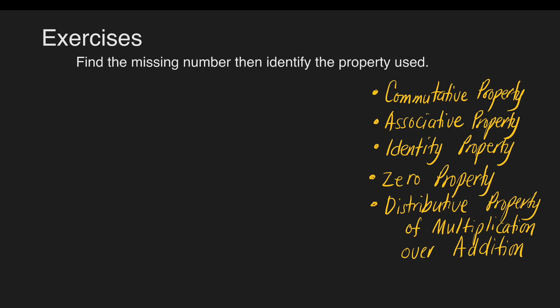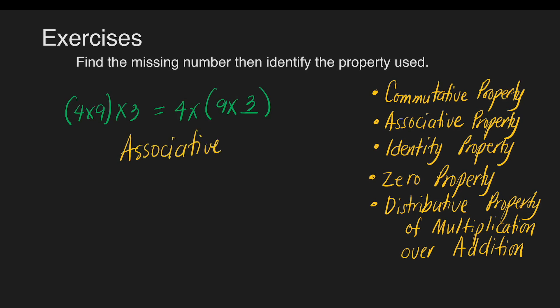Another example: quantity 4 times 9, times 3 is equal to 4 times the quantity 9 times blank. The answer is 3. The grouping is being changed, but we still get the same product. It means the property used is the associative property of multiplication.